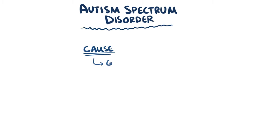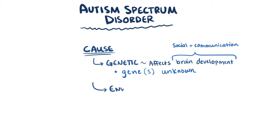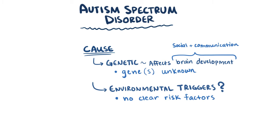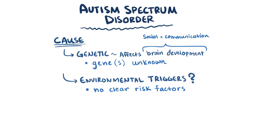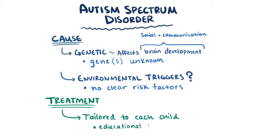Generally speaking, autism spectrum disorder is thought to have a genetic cause, which ultimately affects brain development, specifically areas that affect social and communication behaviors. Which genes or combination of genes are affected in autism spectrum disorder, though, is still very much a mystery. In addition, there are a bunch of environmental triggers that have to be explored, but at the moment there are no clear risk factors that have been identified. There is also no cure for autism spectrum disorder, and treatment or management has to be specifically and carefully tailored to each child. This includes things like specialized education programs and behavior therapy, that all seek to maximize quality of life and functional independence.